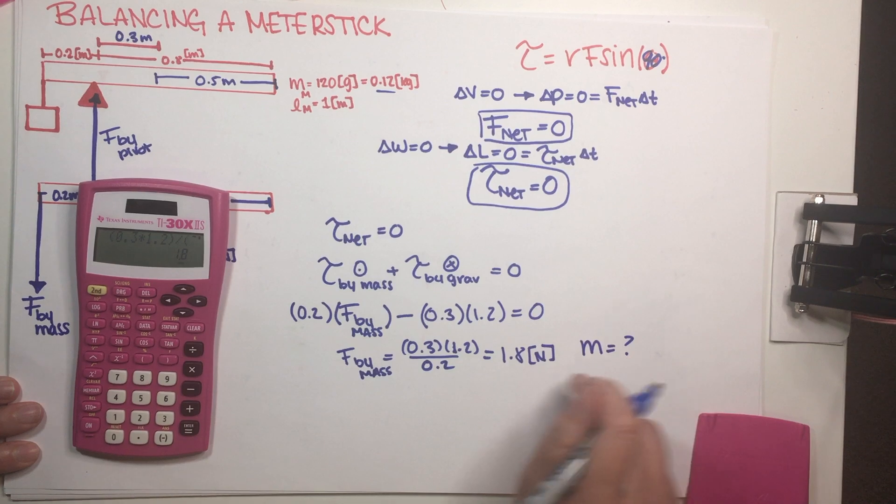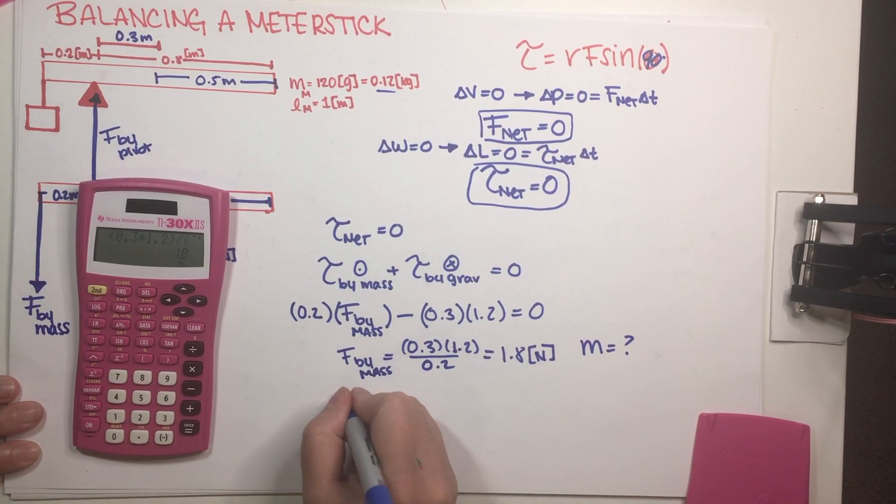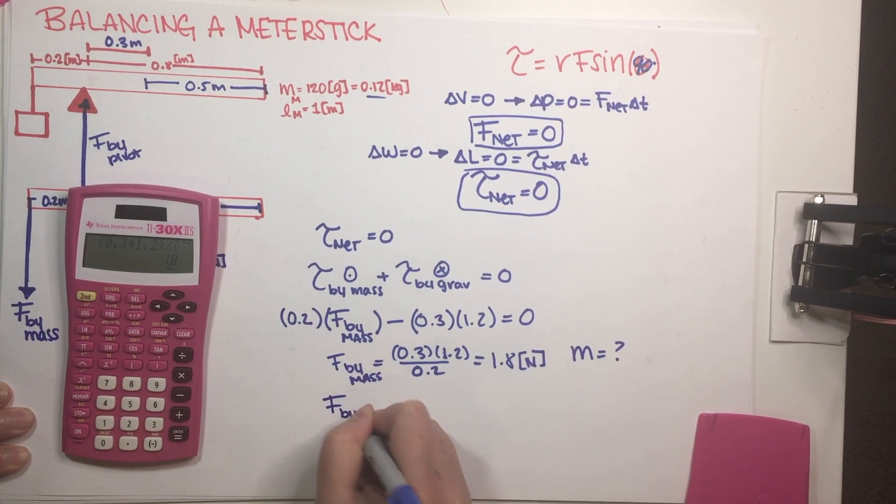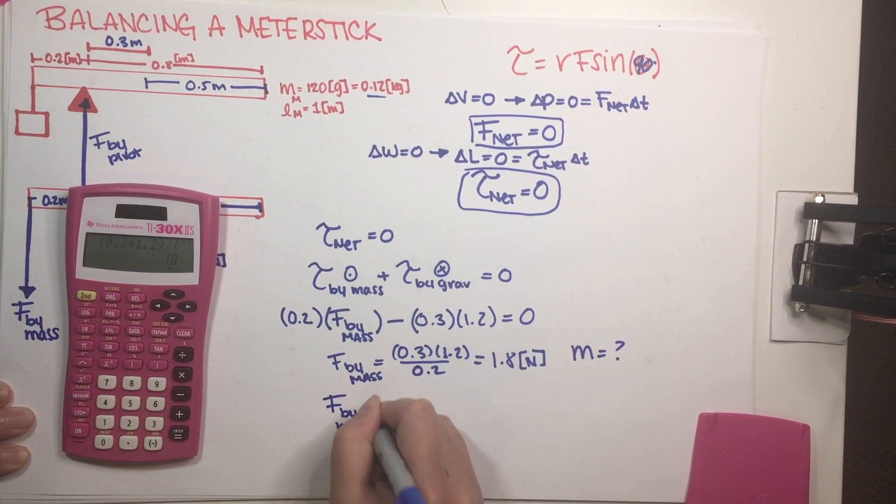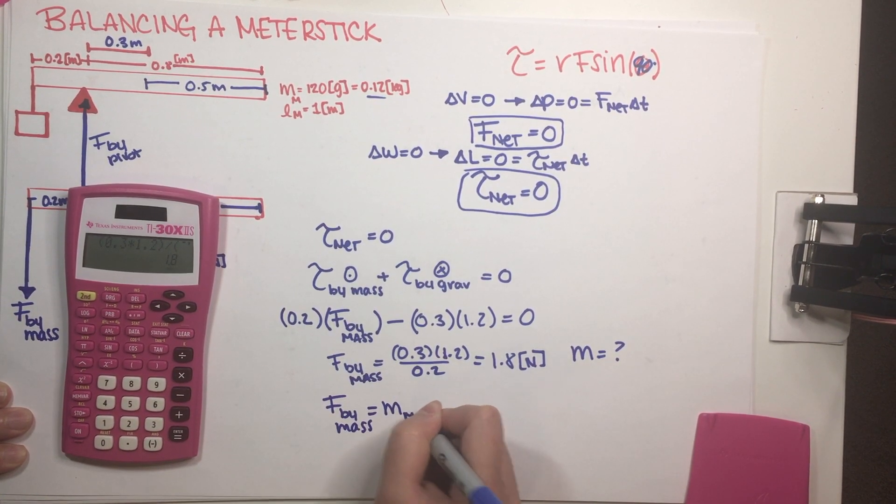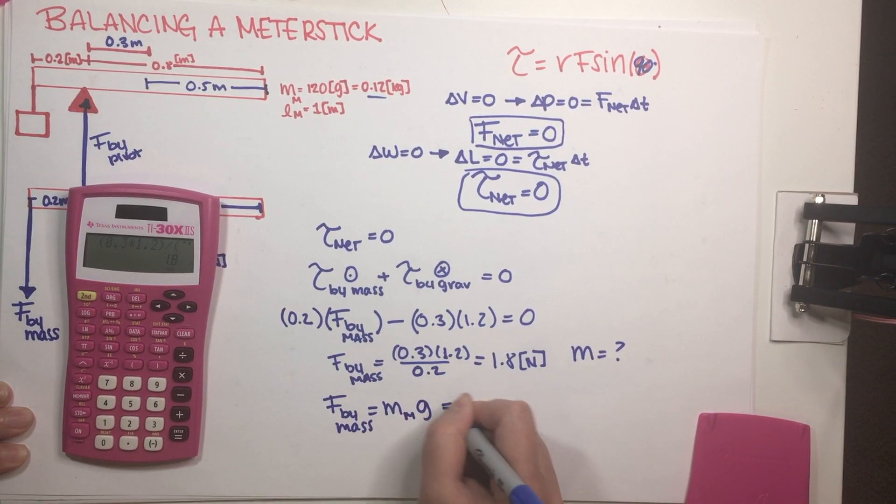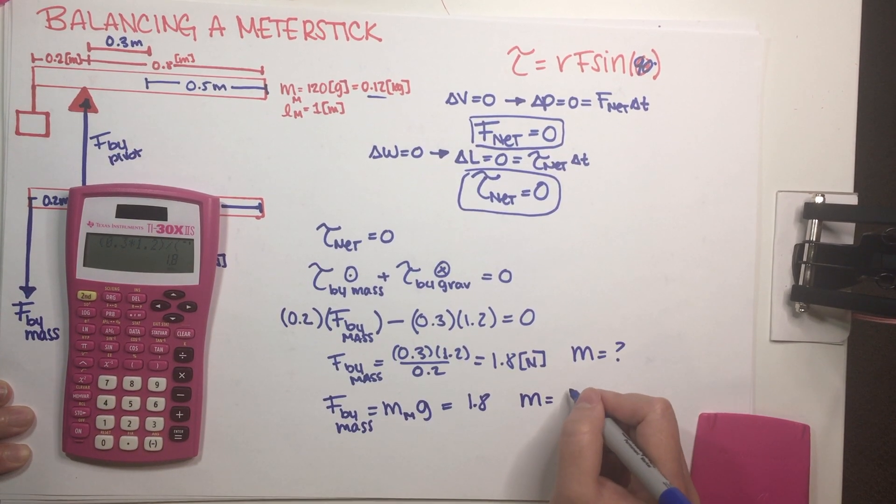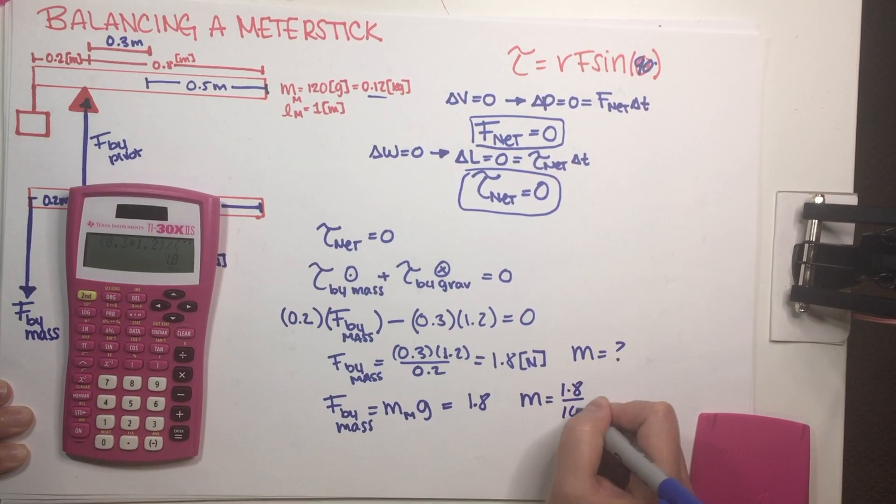So this is equal to 1.8, but just by definition, this is also the mass of the mass times G. So if this is equal to 1.8 and G is equal to 10, the mass is just going to be equal to 1.8 divided by 10.